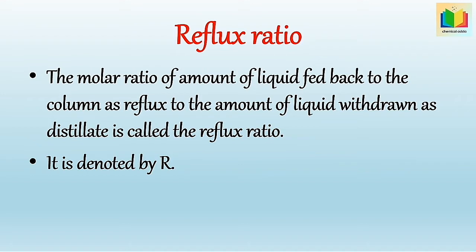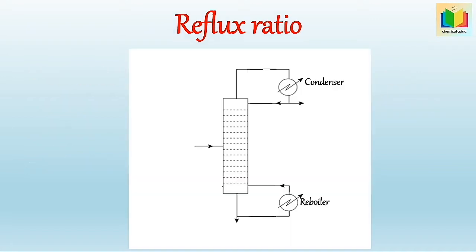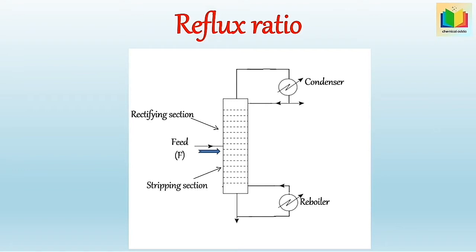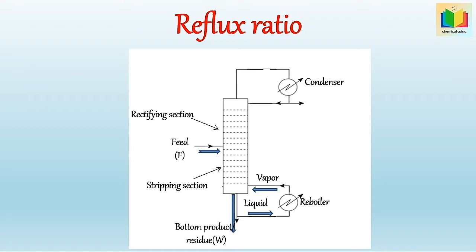In this distillation column, the liquid mixture to be separated is introduced as feed. The tray where feed is introduced is called the feed plate. The section above the feed plate is called the rectifying section, where vapor is washed to remove the less volatile component with liquid. The section below the feed plate including the feed plate is called the stripping section, where liquid is stripped of the more volatile component by rising vapor. Vapors generated in a reboiler are fed to the bottom of the column, and the liquid removed from the bottom is called the bottom product or residue, which is rich in the less volatile component.